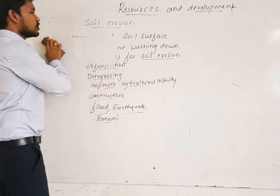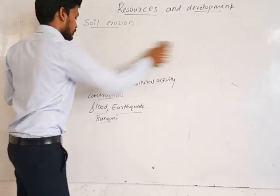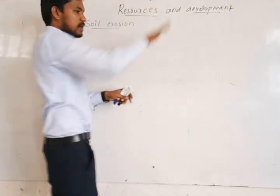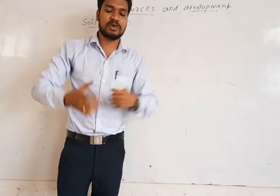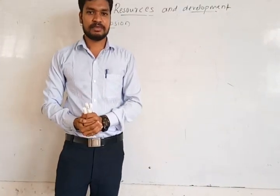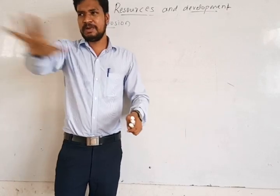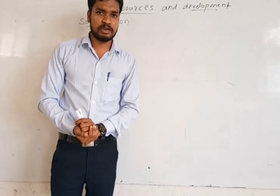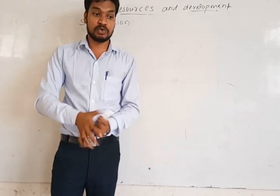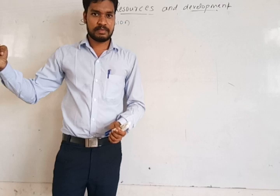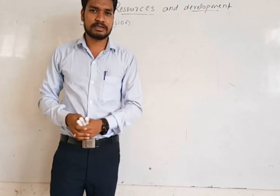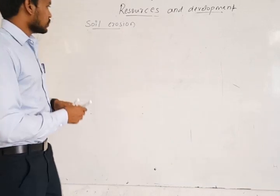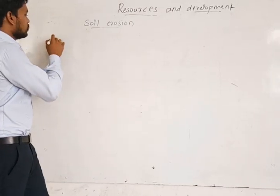In soil erosion, there are many types. The removal of a large surface of the soil is called sheet erosion. When a completely large area — it may be one square kilometer or half square kilometer — is removed by the washing action of water due to precipitation, it is called sheet erosion.